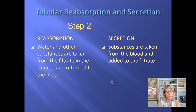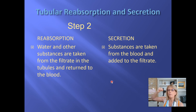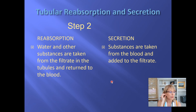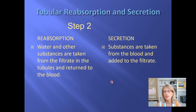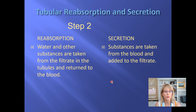Reabsorption: there's lots of stuff in the filtrate including things the body doesn't want to lose in urine — like glucose. The simple cuboidal epithelial cells grab those from the filtrate and put them back into the bloodstream. Tubular secretion works the opposite way: some things still in the blood at the peritubular capillary can be grabbed by the cuboidal epithelial cells and thrown into the already-formed filtrate — that's tubular secretion.